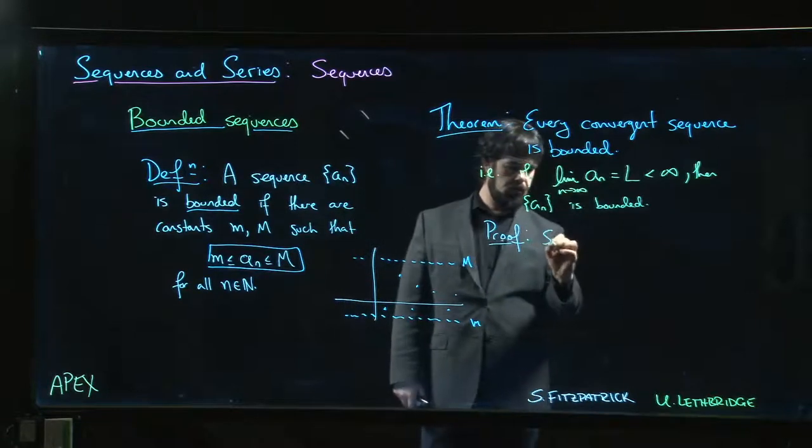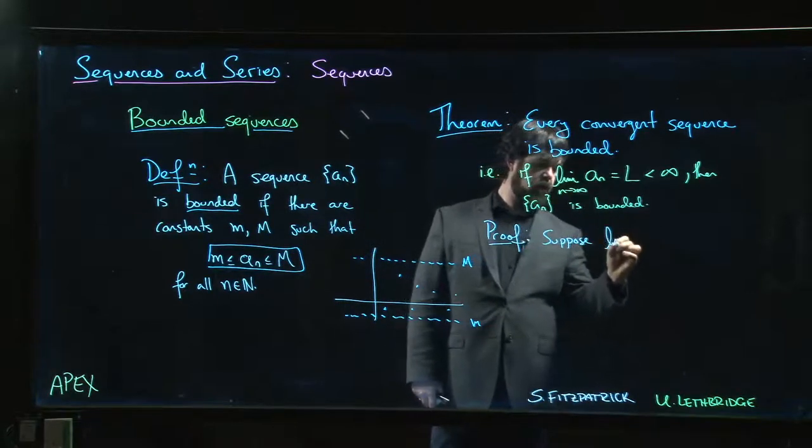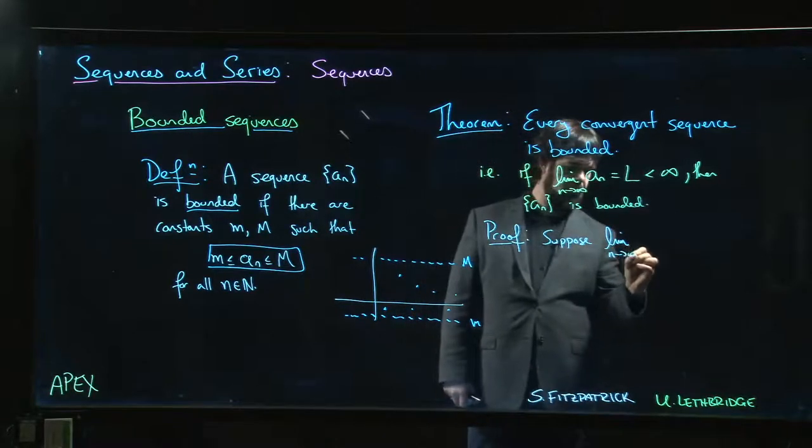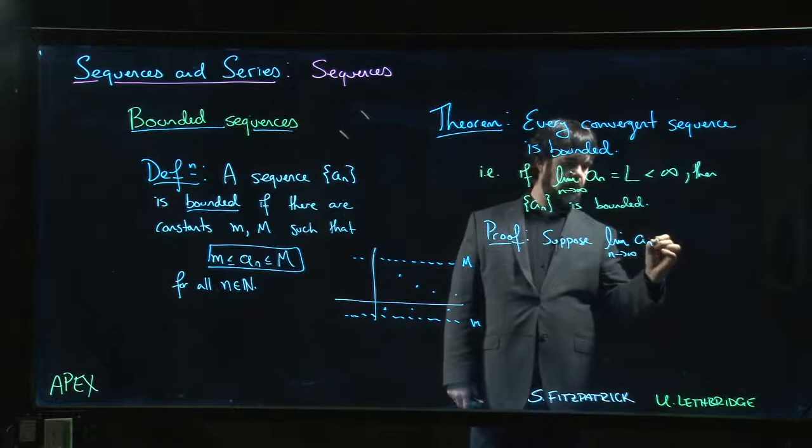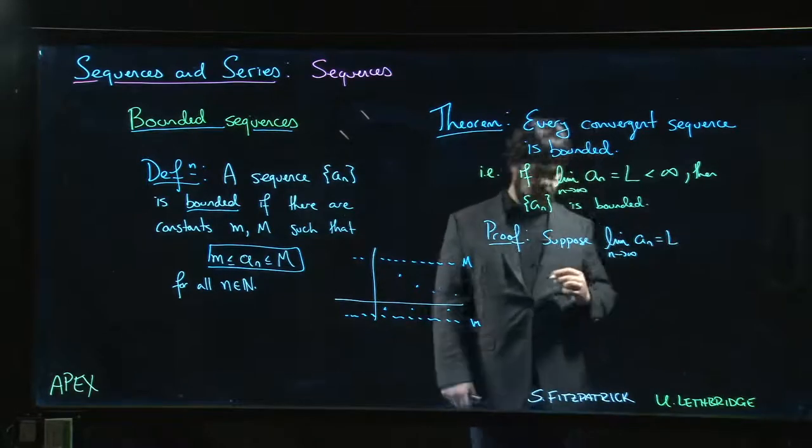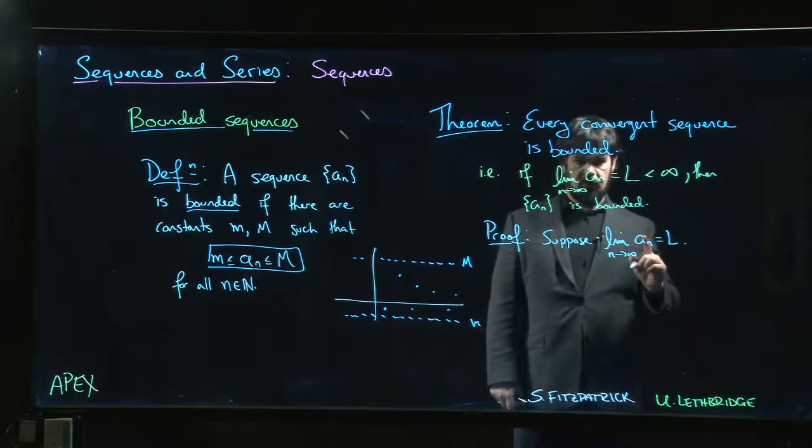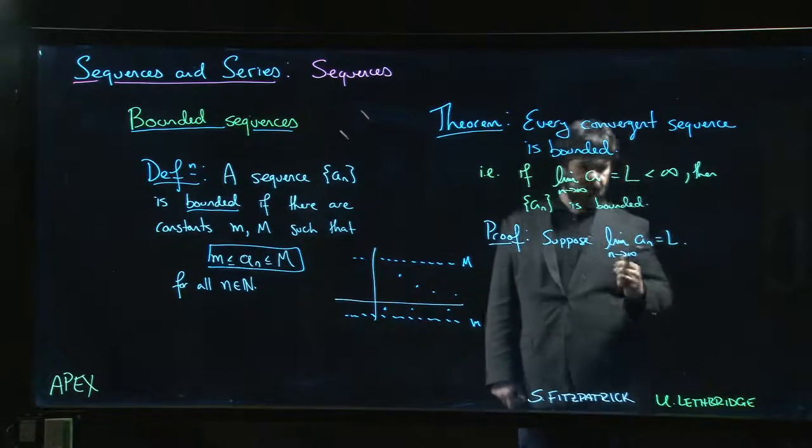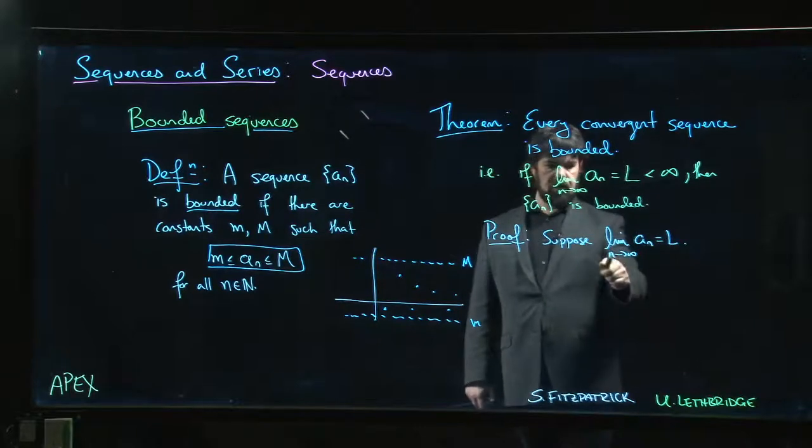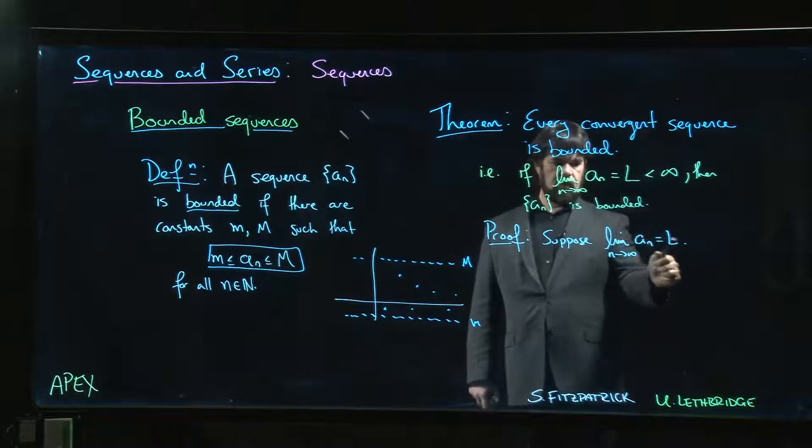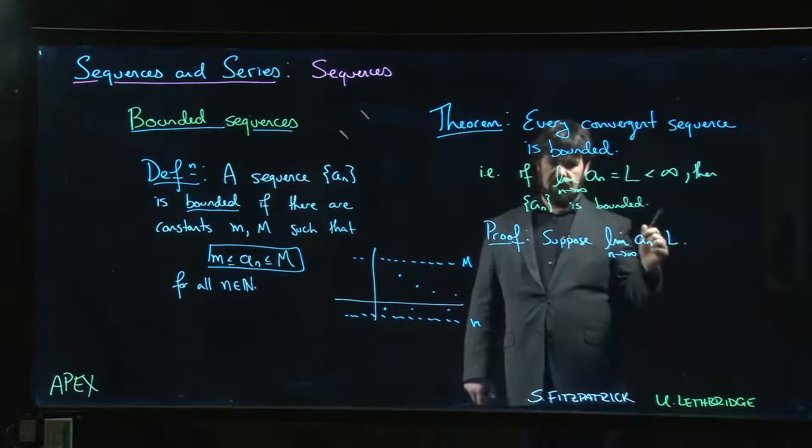Suppose that the limit as n goes to infinity of a_n is equal to L. Now let's think about the definition of convergence. The definition says for every epsilon, I can choose a capital N so that for every little n bigger than that capital N, the difference between a_n and L will be less than epsilon.